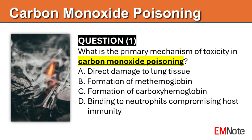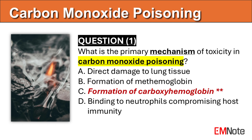Question 1: What is the primary mechanism of toxicity in carbon monoxide poisoning? The correct answer is C. Carbon monoxide binds to hemoglobin more effectively than oxygen, forming carboxyhemoglobin, which reduces the blood's oxygen-carrying capacity and leads to tissue hypoxia.